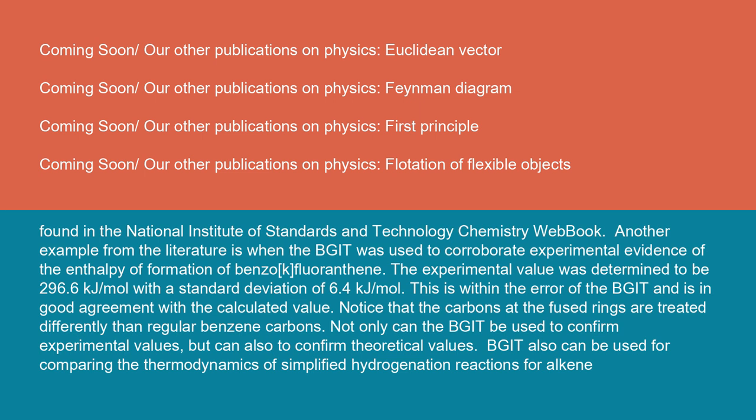Another example from the literature is when the BGIT was used to corroborate experimental evidence of the enthalpy of formation of benzo-K-fluoranthene. The experimental value was determined to be 296.6 kJ/mol with a standard deviation of 6.4 kJ/mol. This is within the error of the BGIT and is in good agreement with the calculated value. Notice that the carbons at the fused rings are treated differently than regular benzene carbons. Not only can the BGIT be used to confirm experimental values, but can also confirm theoretical values.